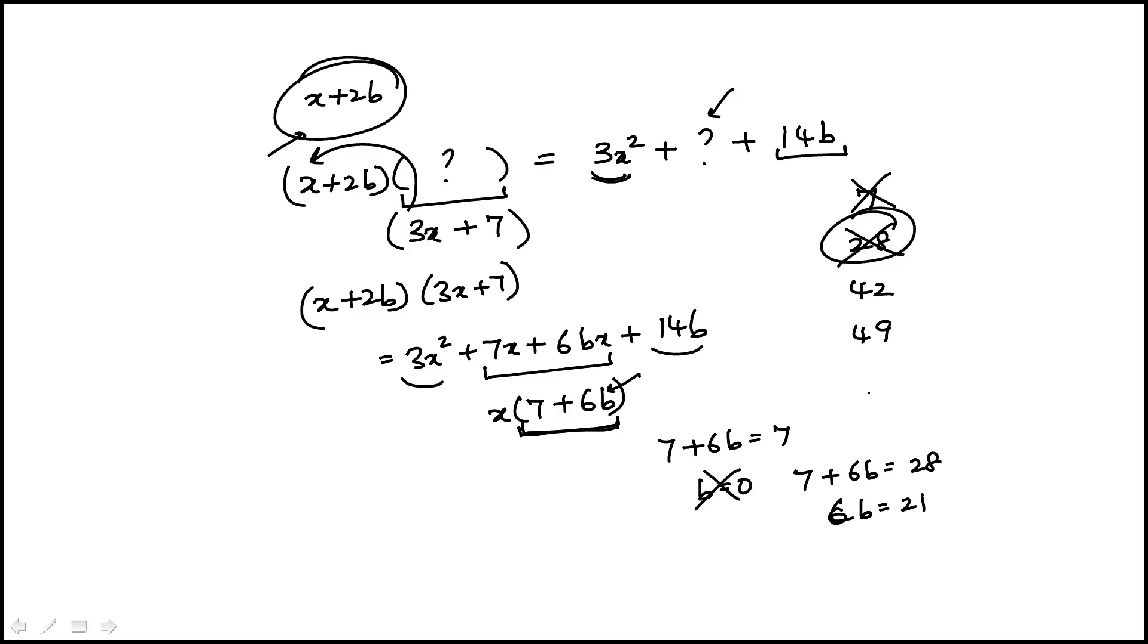If you try 42, 7 plus 6b is 42, again you will see b is not an integer. And therefore, that's also not the choice. So we're only left with 49, which has to be the answer.